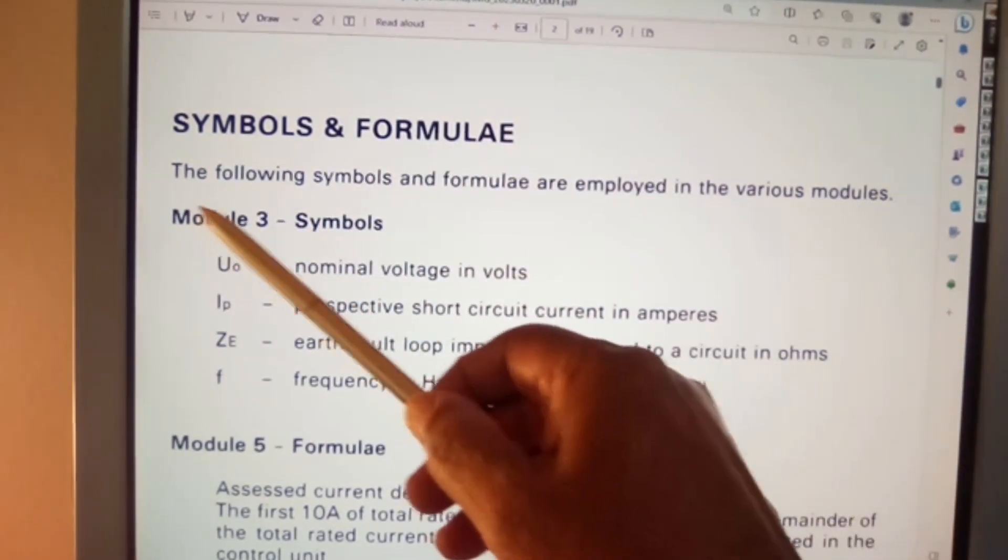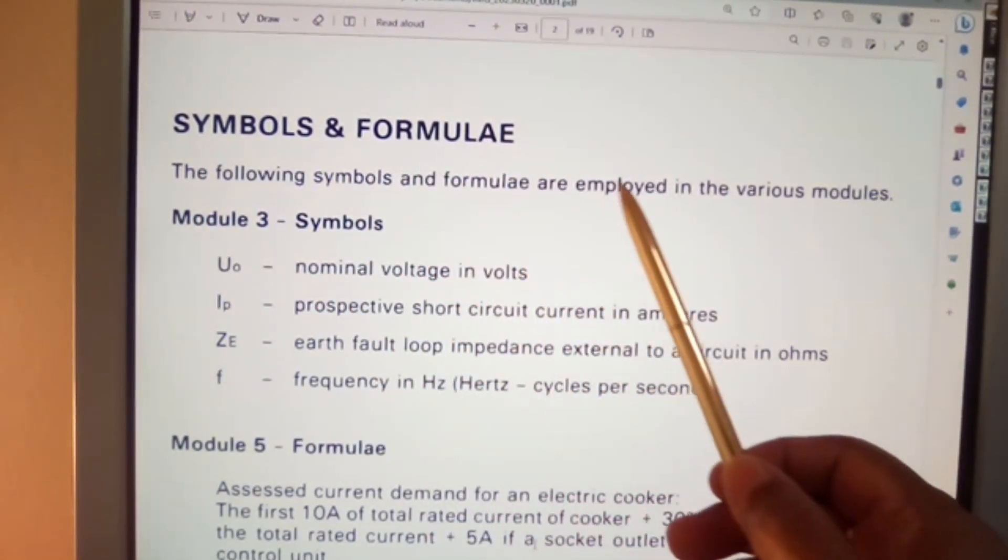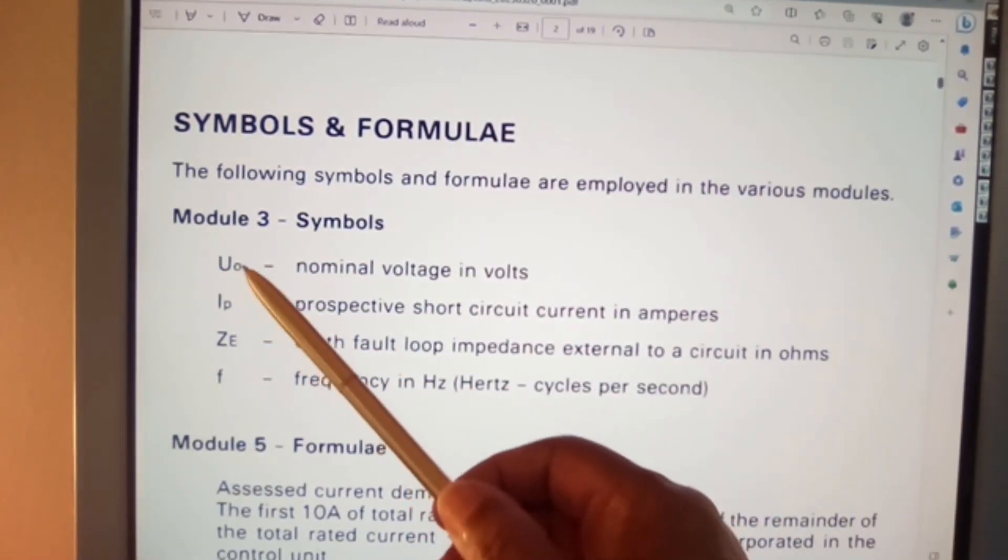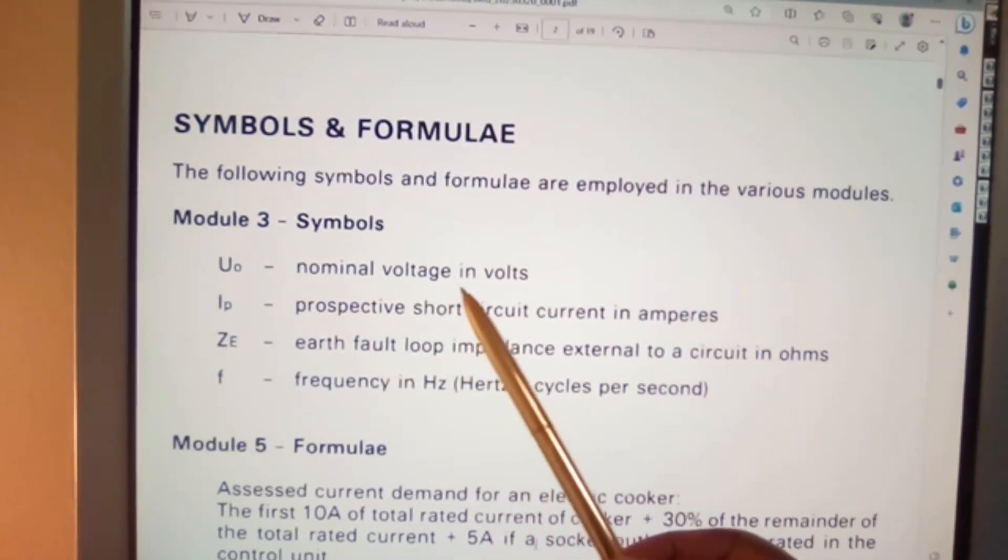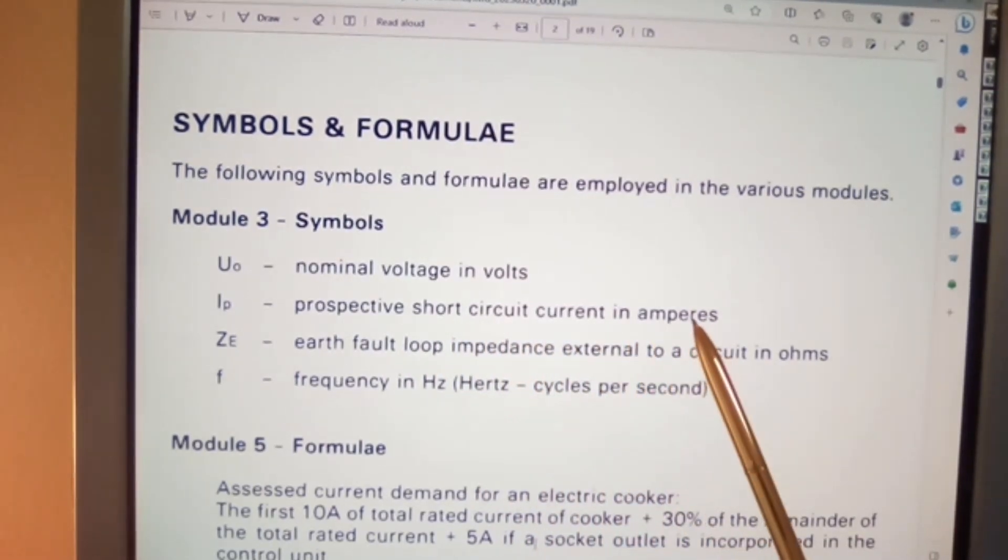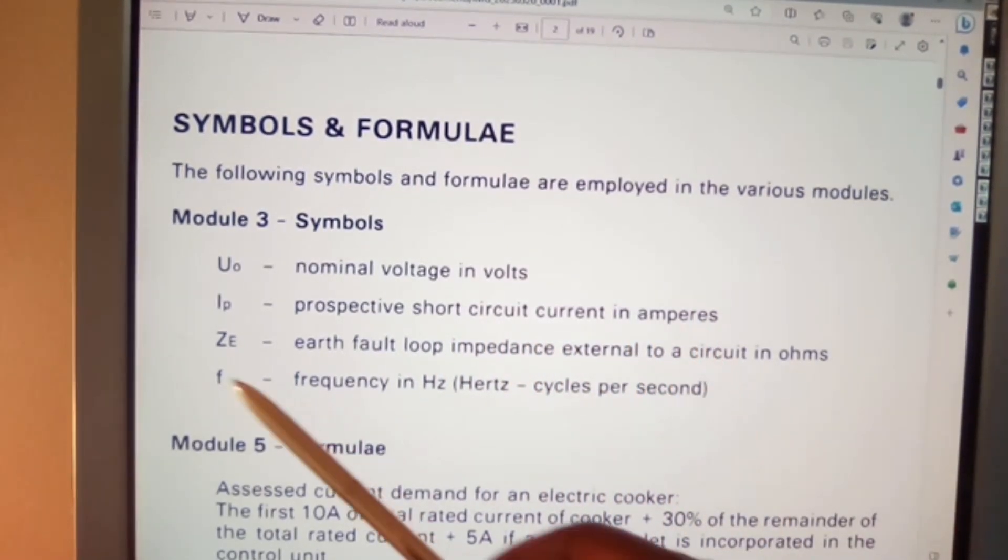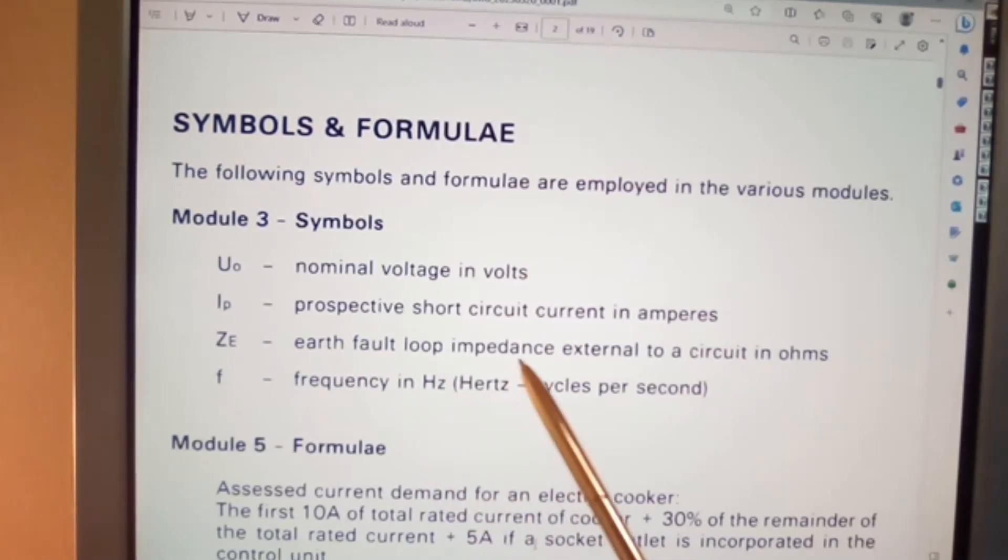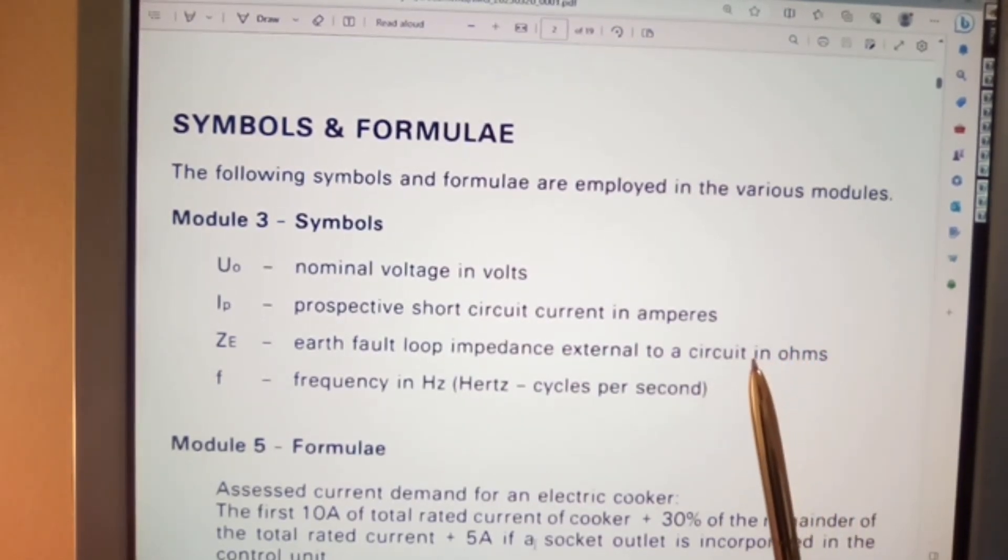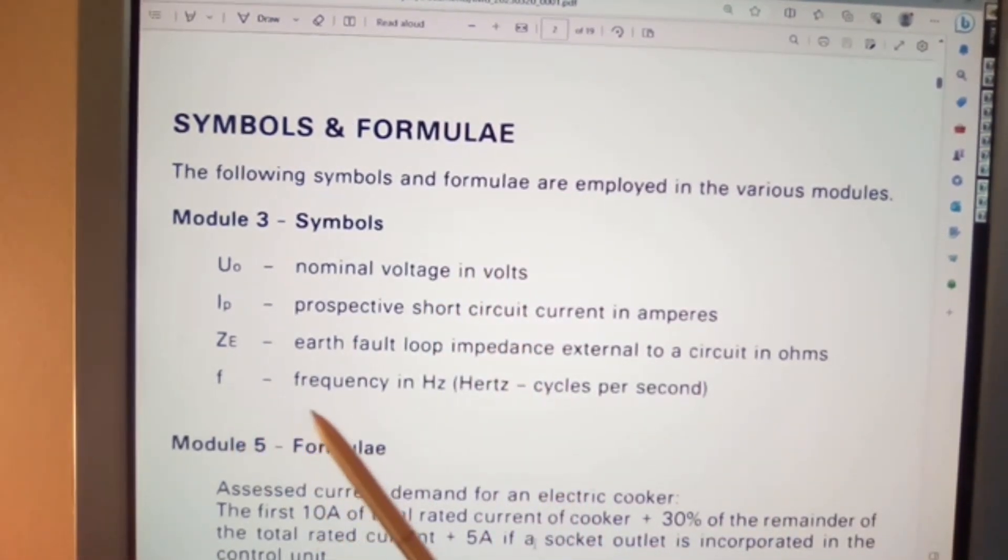Now symbols and formulae. The following symbols and formulae are employed in the various modules. U₀ equals nominal voltage in volts. IP, prospective short circuit current in amperes. ZE, earth fault loop impedance external to a circuit in ohms. That's the external impedance that the earth fault loop would encounter should an earth fault loop occur. F, frequency in hertz, cycles per second.